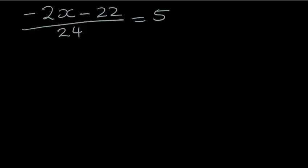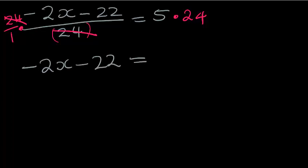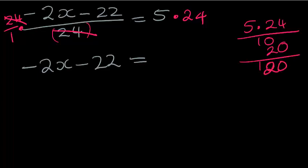So this was the last line we had on our previous slide. Now, the objective is to get x by itself. I want x alone. The first thing that I'm going to do is get rid of this 24. So I'm going to multiply by 24 over 1 so that this and this cancels out. What I do on the left hand side, I do on the right hand side. So what I have left is, on the left I have minus 2x minus 22 is equal to 5 times 24. So let's calculate that quickly. 5 times 24 is going to give me 120 on the right hand side.